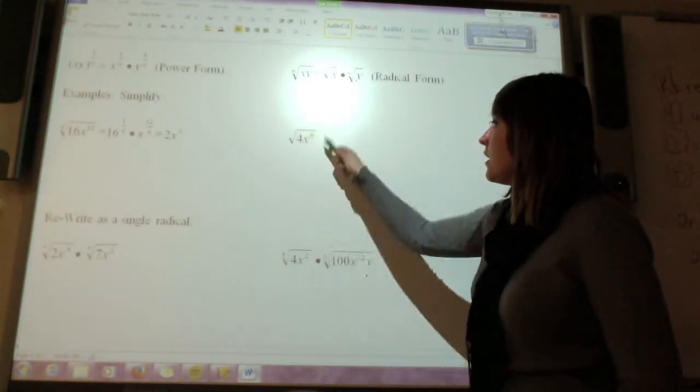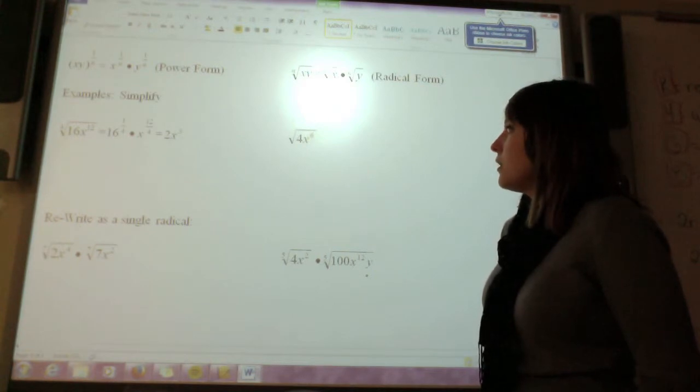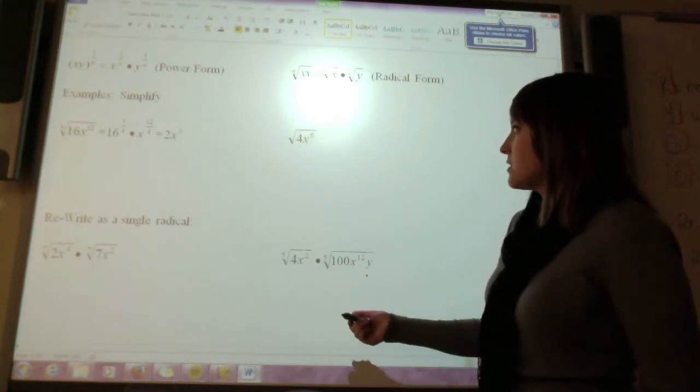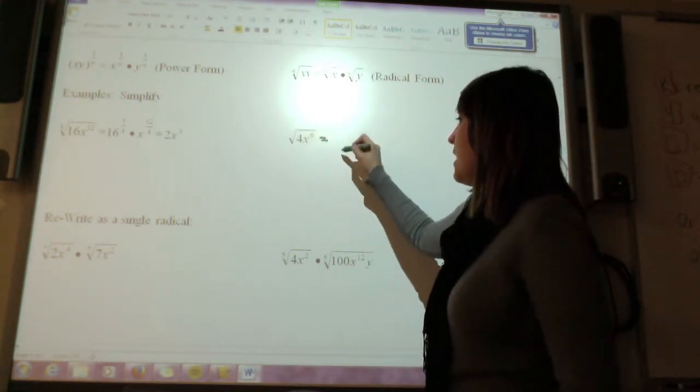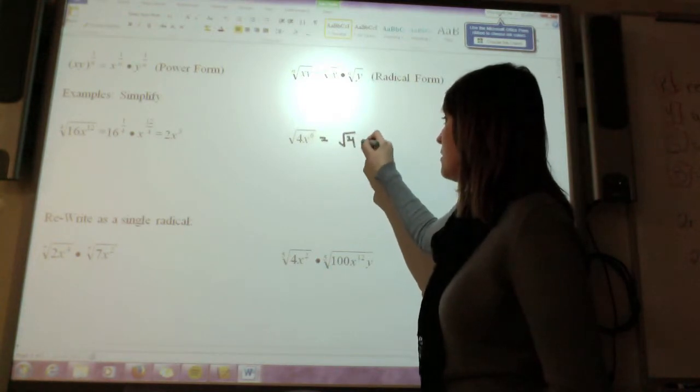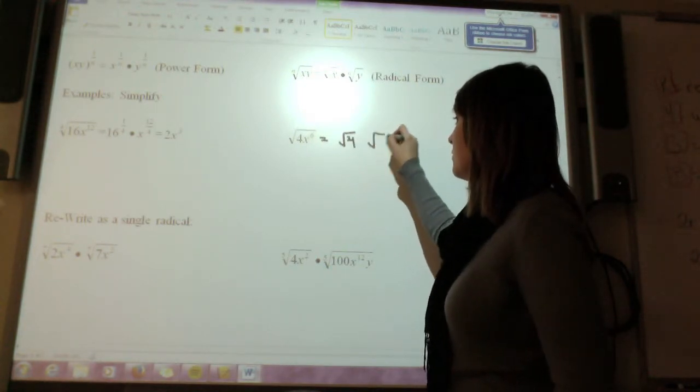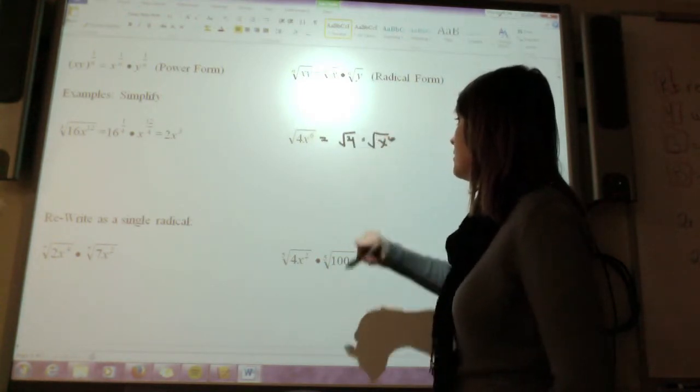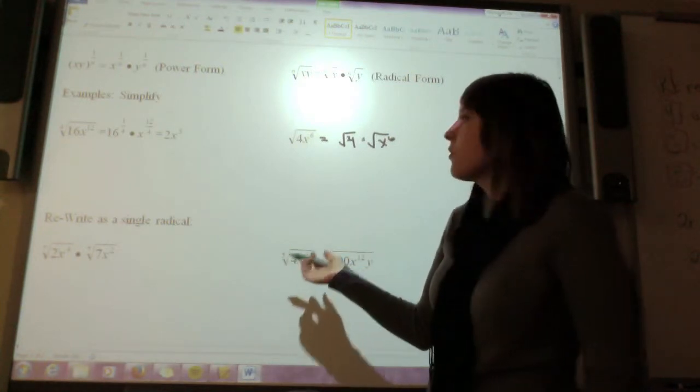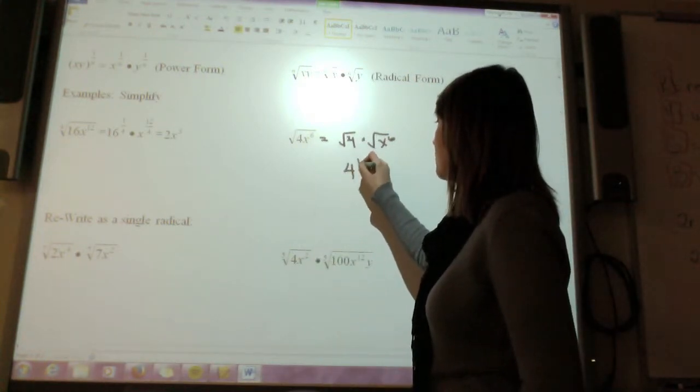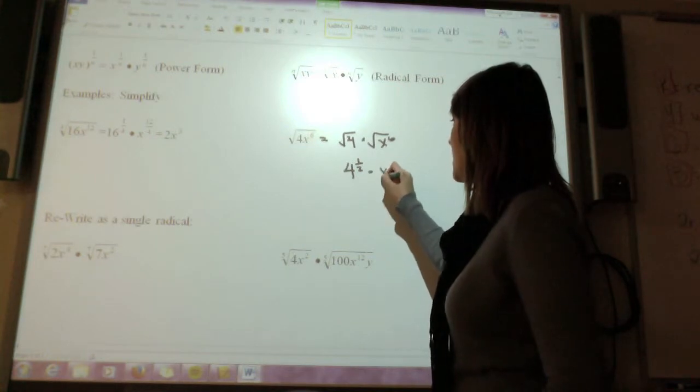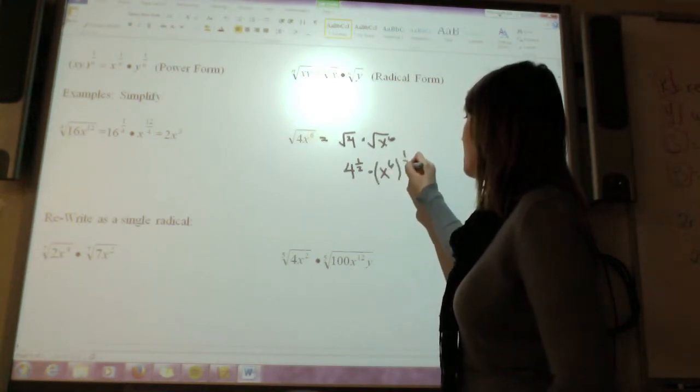If I want to do the same thing over here, I've got the square root of 4x to the sixth. So I can rewrite that as the square root of 4 times the square root of x to the sixth. Or if you wanted to write it in your power form, you can write it as 4 to the 1 half times x to the sixth to the 1 half.